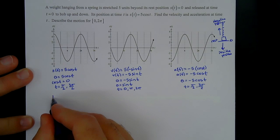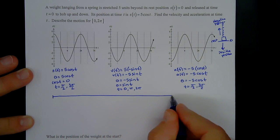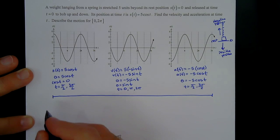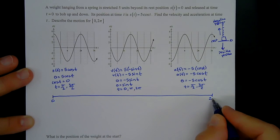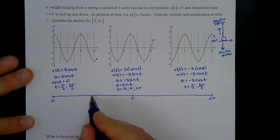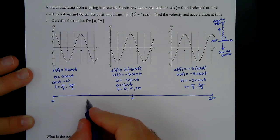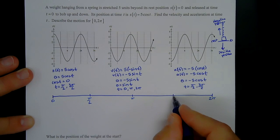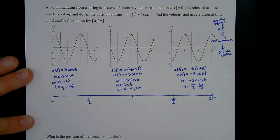We make a number line going from 0 to 2π, with π in the middle, and π/2 and 3π/2 as the quarter points. We'll look at the combinations of position, velocity, and acceleration to determine where each is positive or negative, and from that determine whether the weight is moving toward the origin, away from it, speeding up, or slowing down.